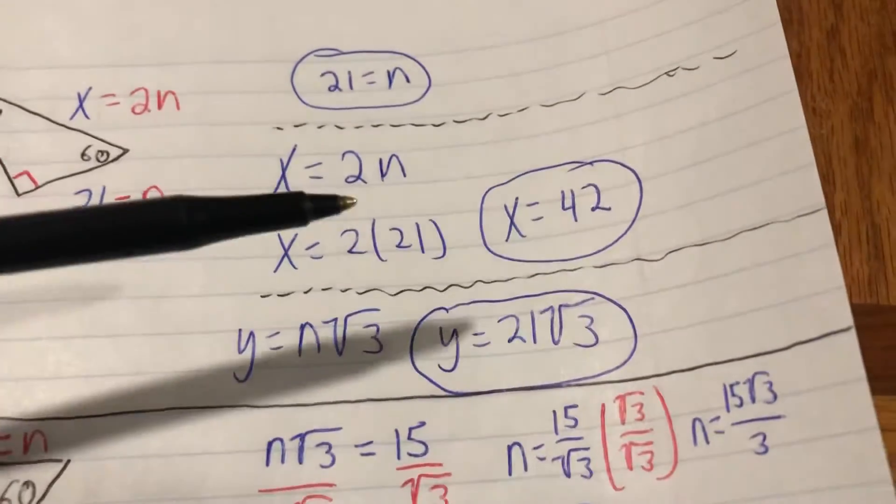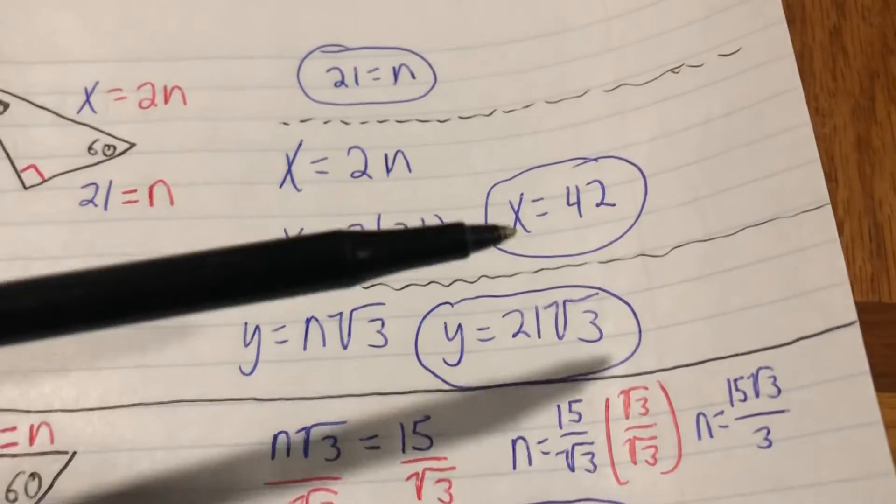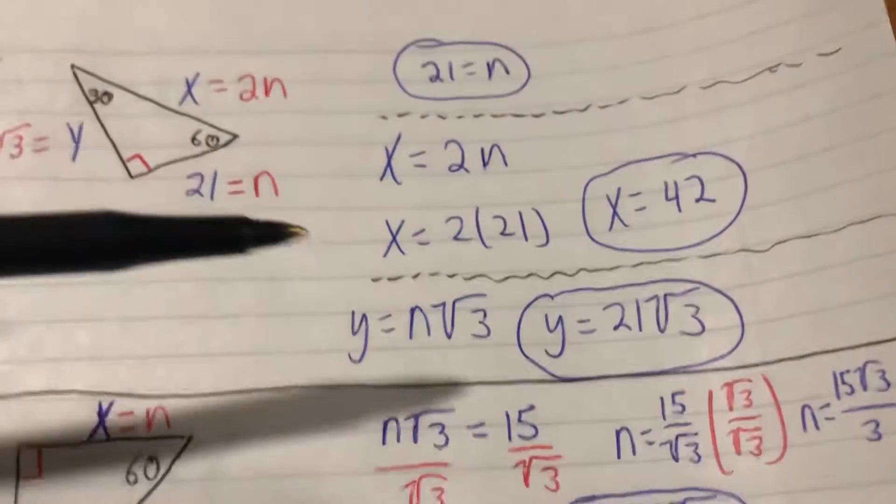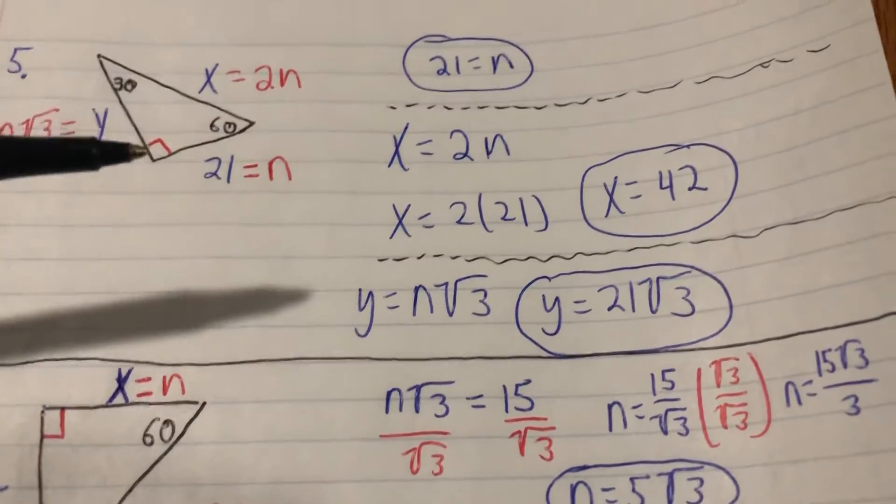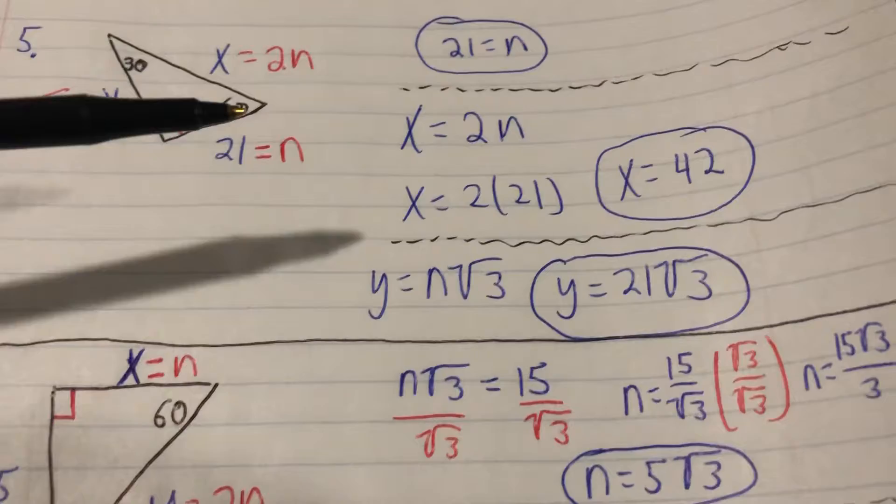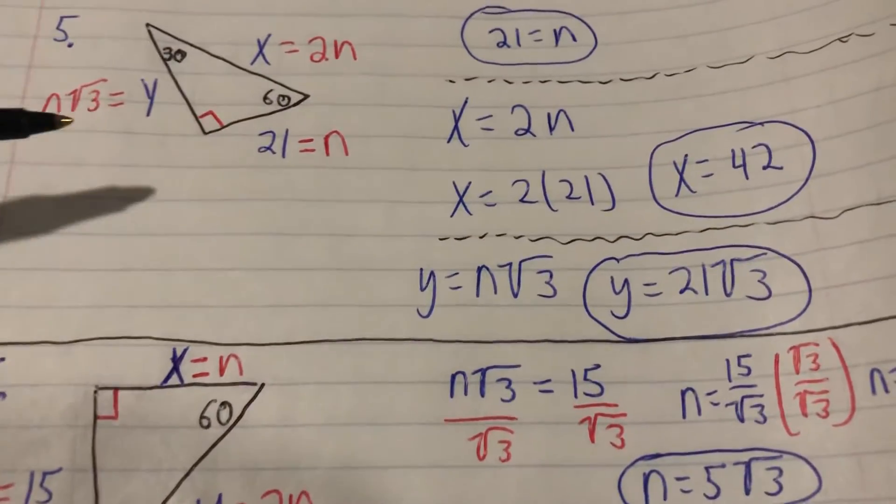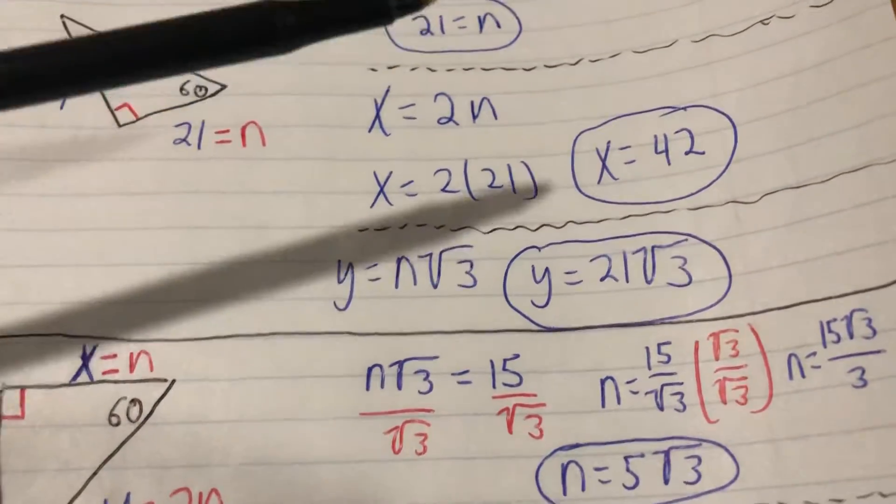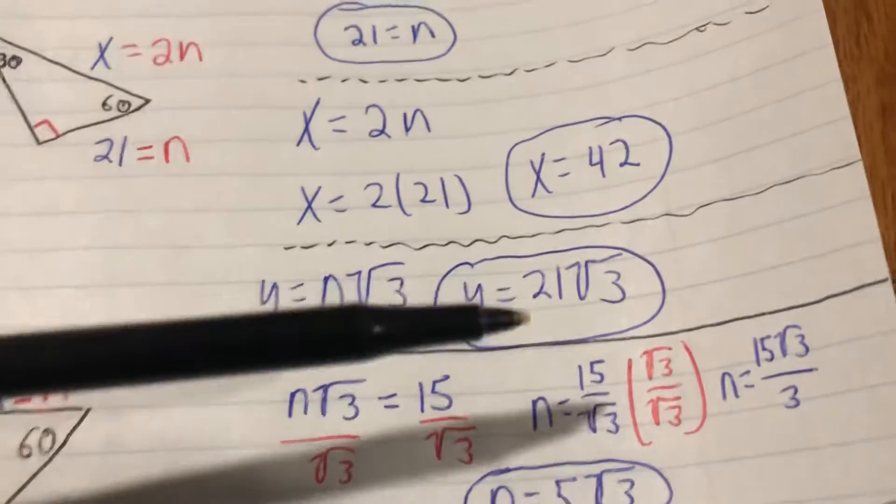x is equal to 2n, so x is equal to 2 times that 21—x is going to be 42. Now looking at y, which is opposite from 60, y is equal to n√3, so we're going to go ahead and plug in that 21 there, so we got y equals 21√3.